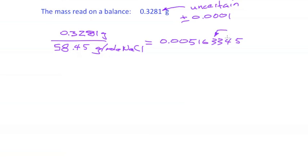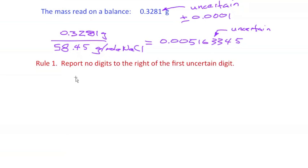So this is the first uncertain digit. Everything to the right of that is even less reliable. In general, we then report no digits to the right of the first uncertain digit. But let me emphasize that this is meant for the final result.